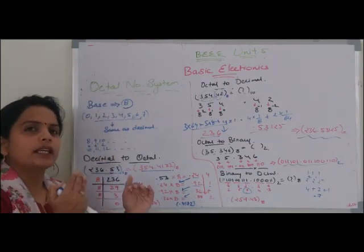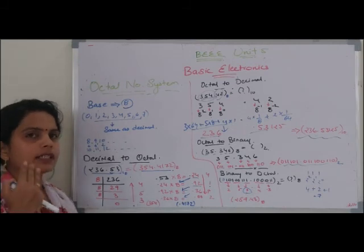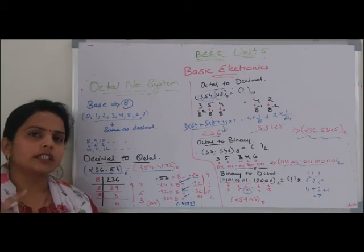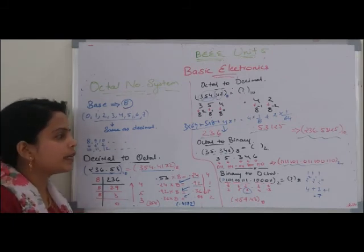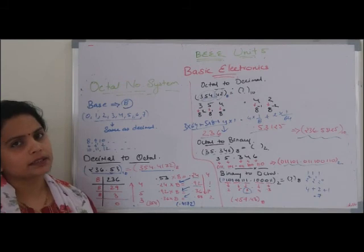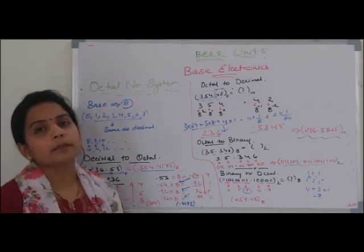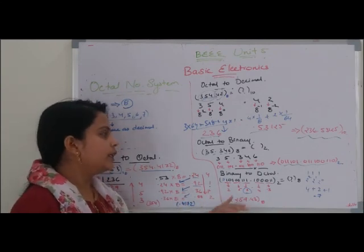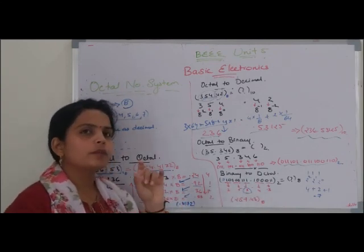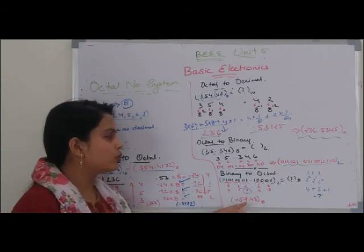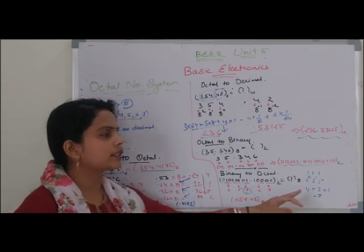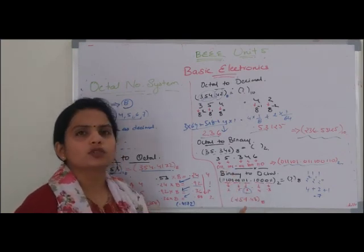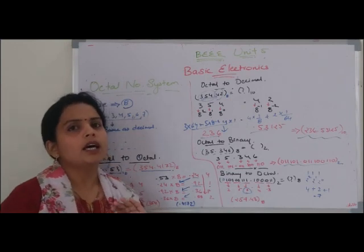Summary of binary to octal conversion: For the digits before the decimal point, go right to left and make groups of 3. For digits after the decimal point, go left to right and make groups of 3. If a group is incomplete, add zeros — after decimal add zeros at the end; before decimal add zeros at the beginning. Then convert each 3-digit binary group to its decimal equivalent and write them together to get the final octal answer.